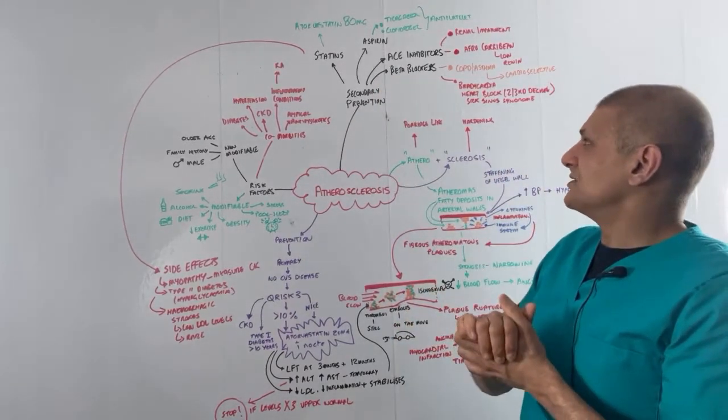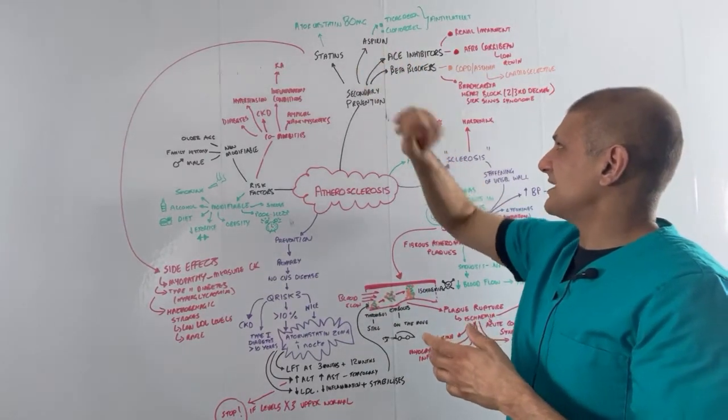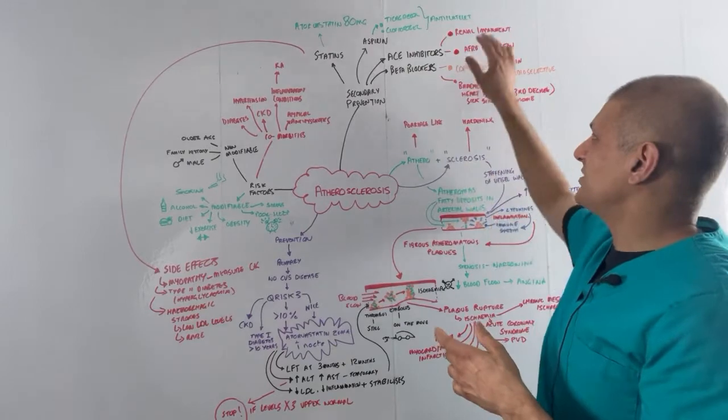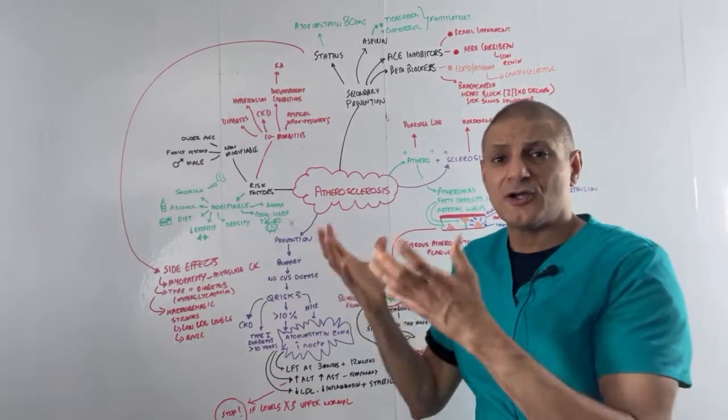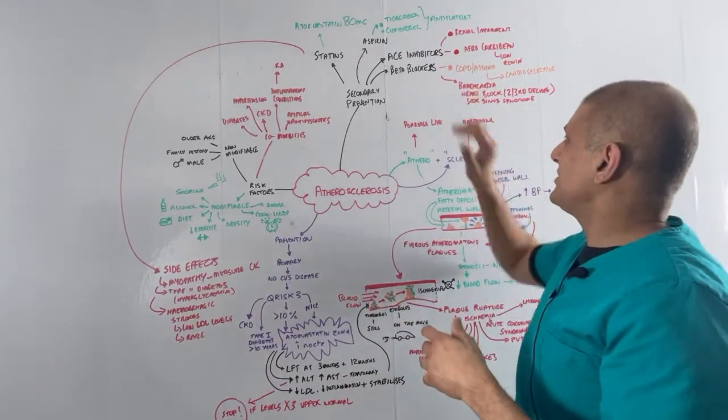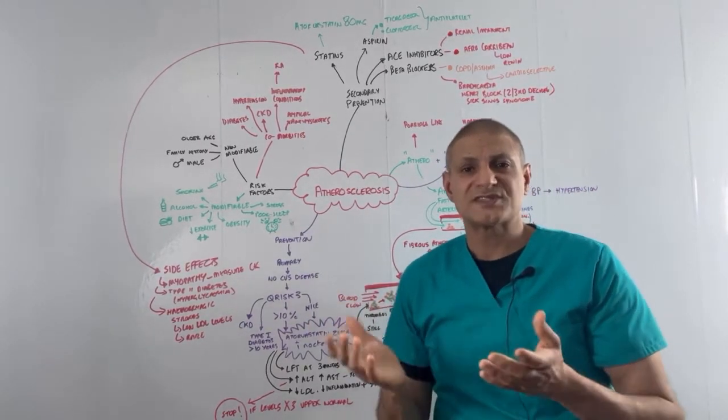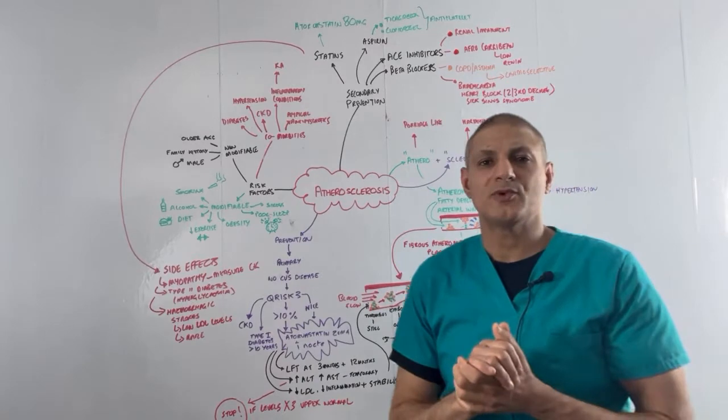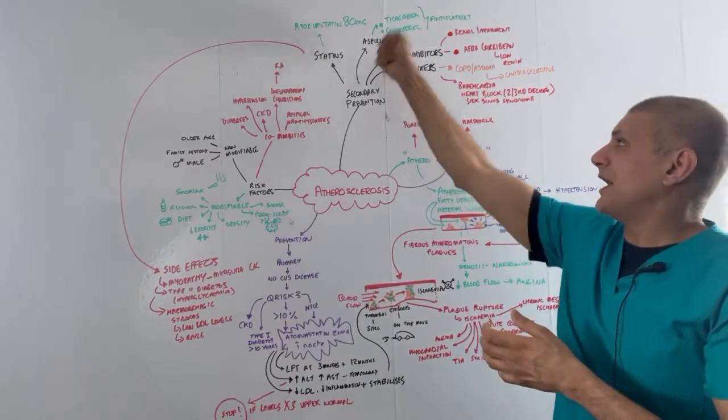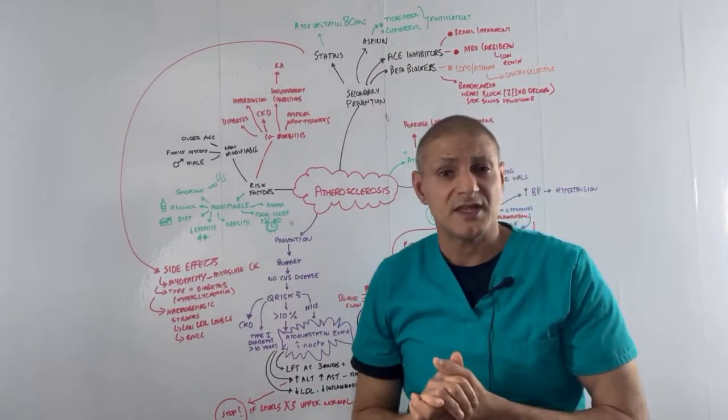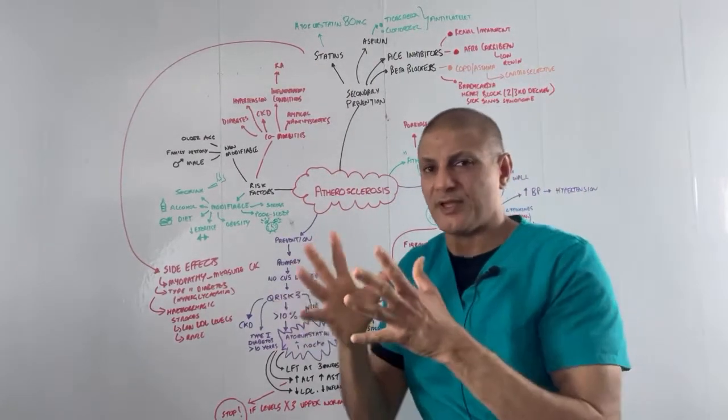Let's look at the secondary prevention. So we're going to give four classes of drugs: ACE inhibitors, beta blockers, aspirin and statins. ACE inhibitors, contraindications: those suffering from renal impairment, Afro-Caribbeans, because they have low circulating levels of renin. Beta blockers: we're not going to give it to someone suffering from bradycardia, second or third degree heart block or sick sinus syndrome. We can give it to people who suffer with COPD and asthma. We can then give the cardioselective beta blockers. The aspirin, we're going to give it in addition to other antiplatelet drugs. And the statins, we're going to give atorvastatin 80mg, a whopping dose.